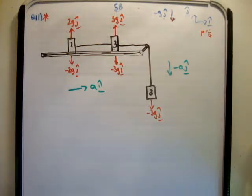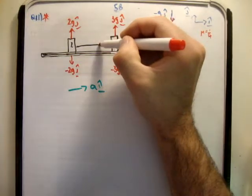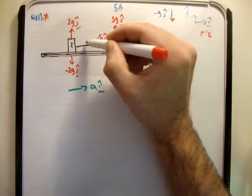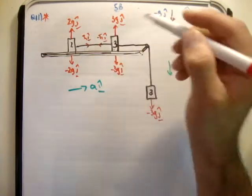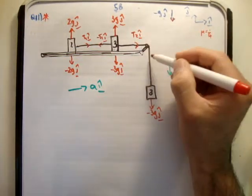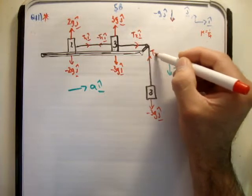Now let's look at the tensional forces. The tensional forces are equal in magnitude only because the mass of the rope is zero. So I have a tensional force here of negative t1i hat, and a tensional force here of t1i hat. Tensional force here of t2i hat, and a tensional force here of t2j hat.